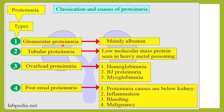Glomerular proteinuria is mainly because of damage to the glomerulus, and it is mainly albumin which is excreted. Tubular proteinuria is mainly because of the loss of tubular reabsorption capacity of the tubules, and mainly happens because of tubulo-interstitial disease.